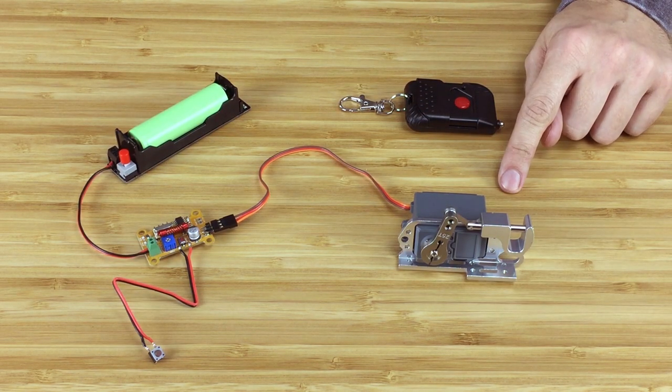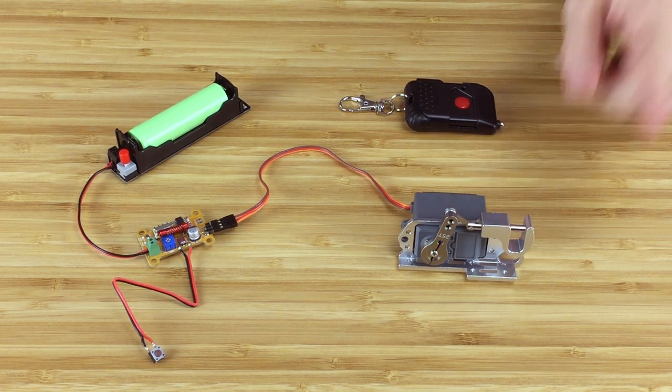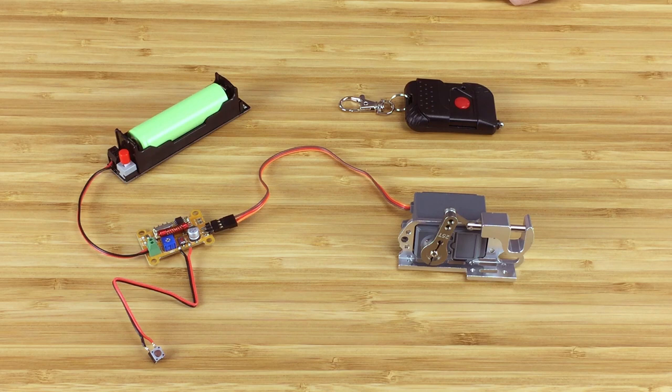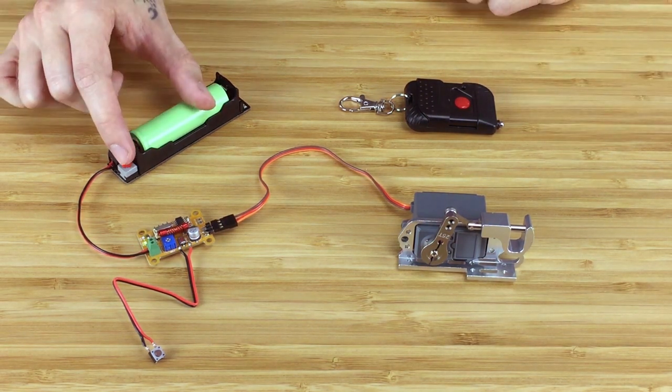The servo we're using is a standard one, which has enough strength for the whole task, and is mounted on the locking mechanism allowing us to load and fire our catapult. Now, once everything is connected, we test it to see if it works as it should.